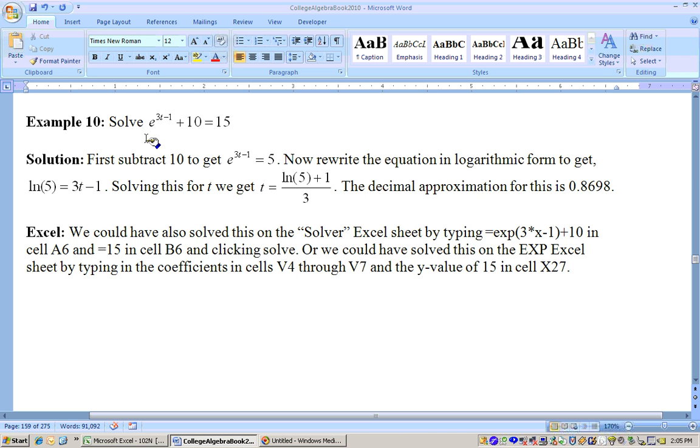Okay, on this problem we're asked to solve e to the 3t minus 1 plus 10 equals 15. You could do this by hand by first subtracting the 10 from both sides.